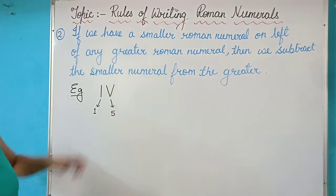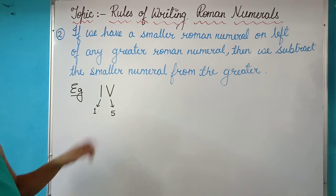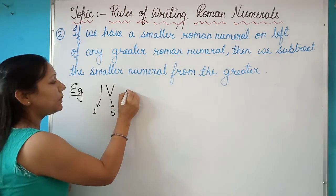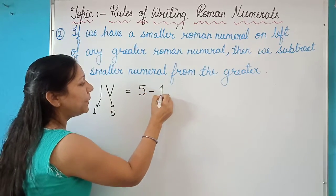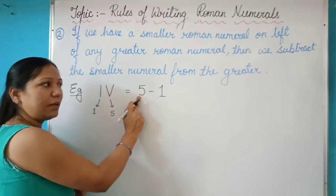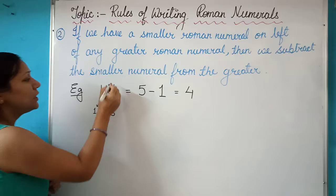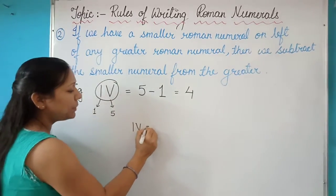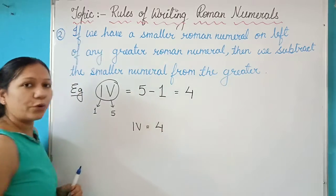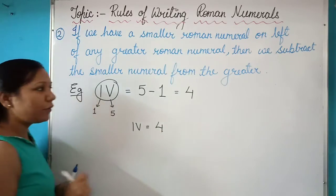According to our statement, since there is a smaller numeral on the left of the bigger numeral, we need to subtract the smaller numeral from the bigger. That means 5 minus 1 and the result is 4. So we can say that symbol IV represents digit 4 of Hindu Arabic.